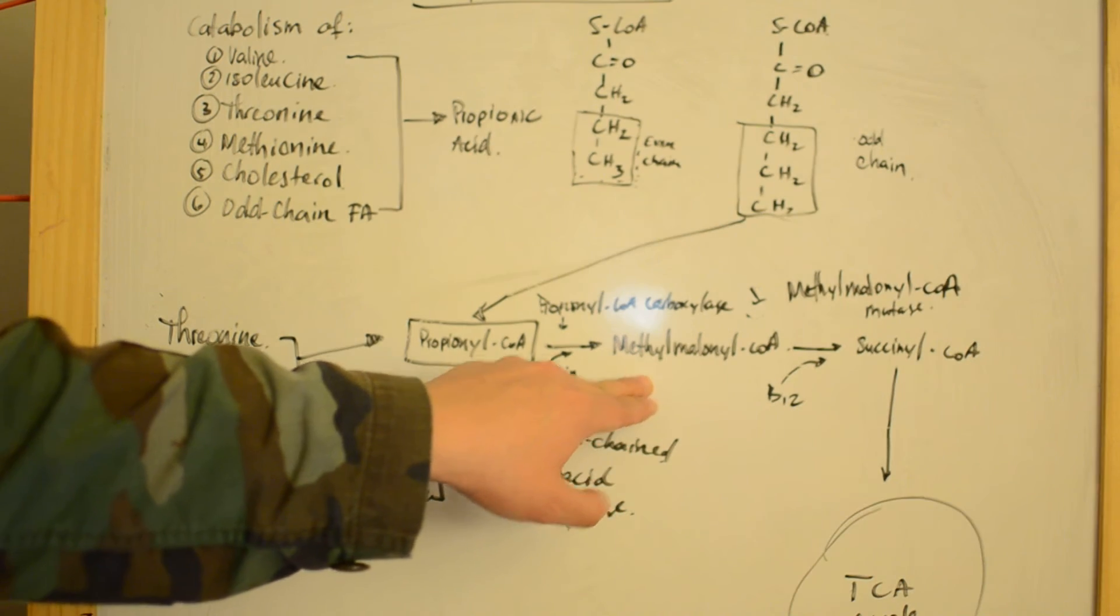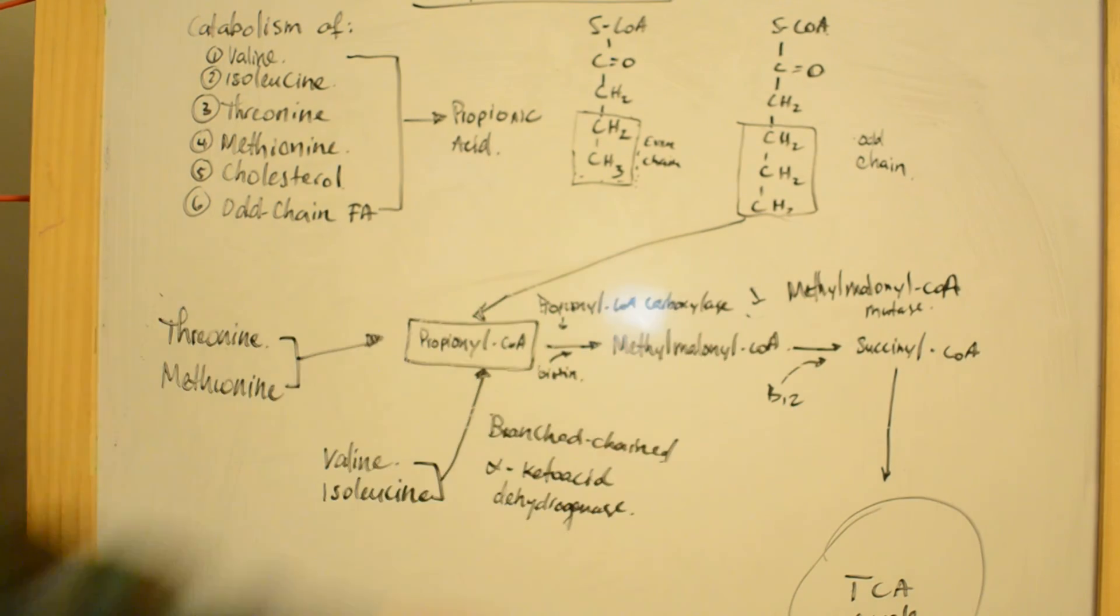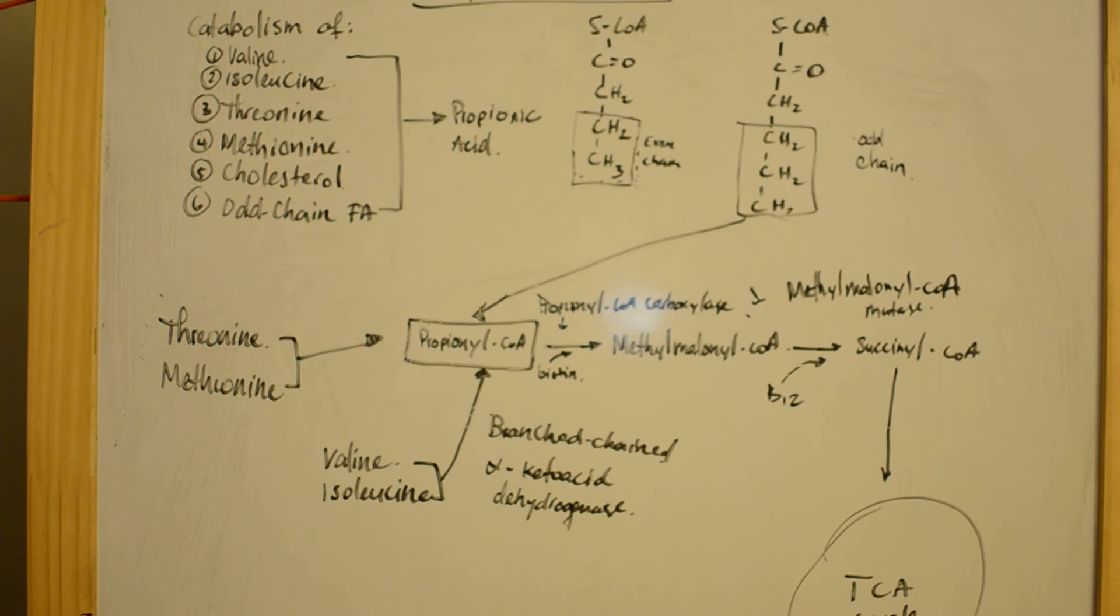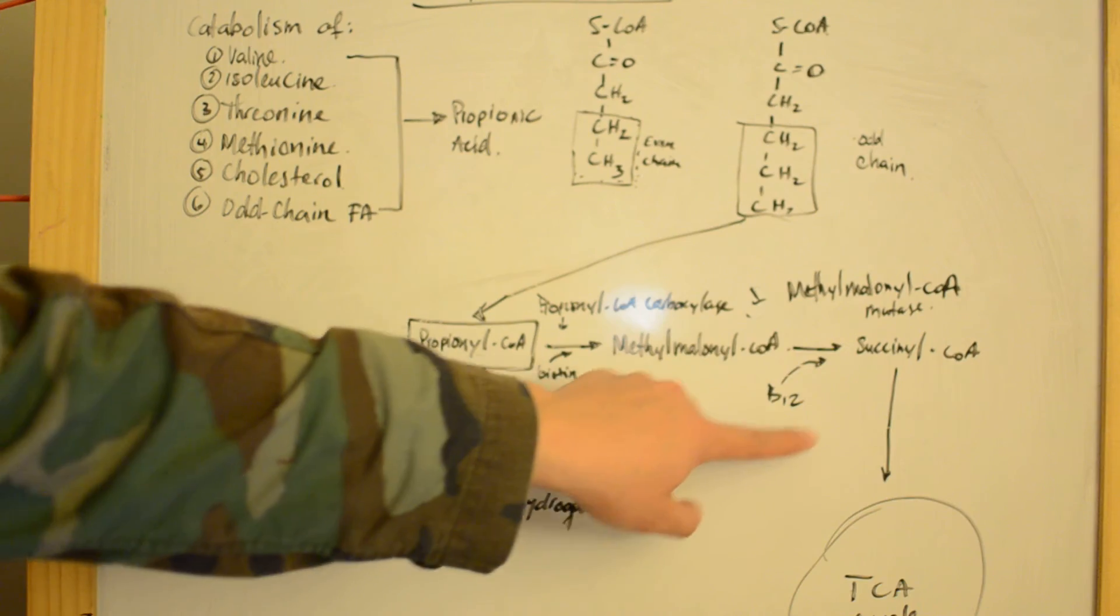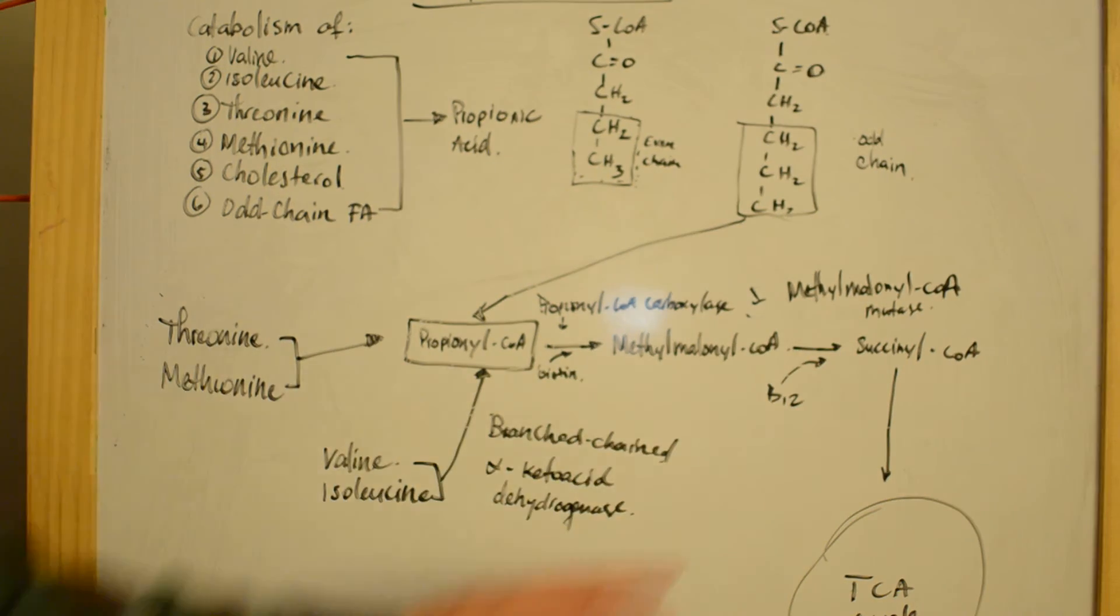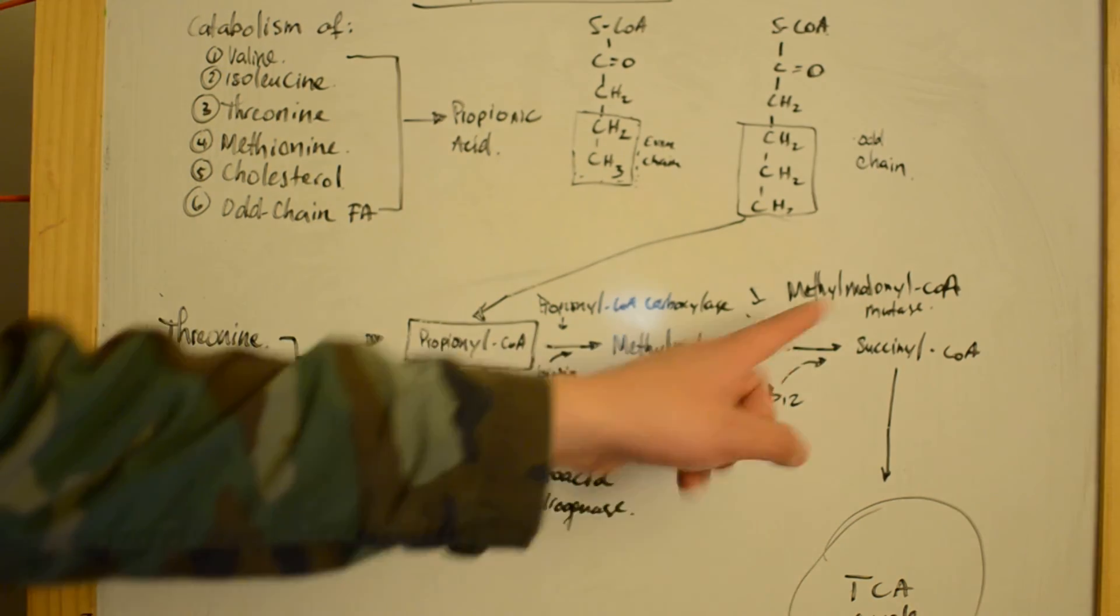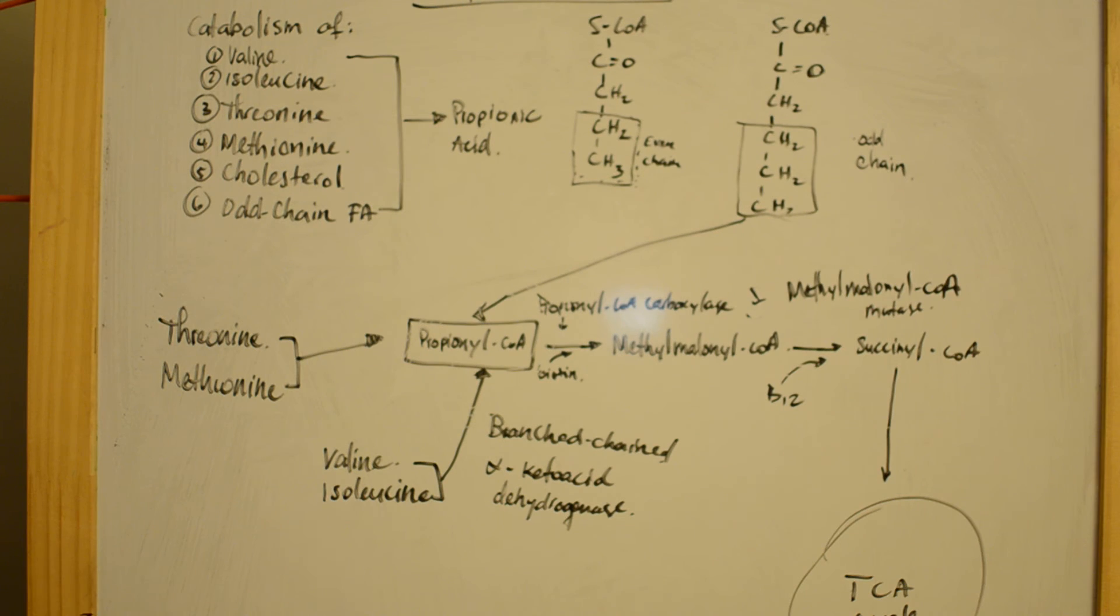Methylmalonyl-CoA uses methylmalonyl-CoA mutase to convert into succinyl-CoA with the help of B12 as a cofactor, and succinyl-CoA enters the TCA cycle.